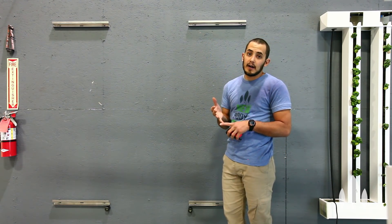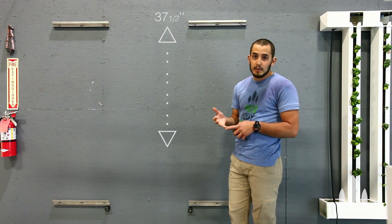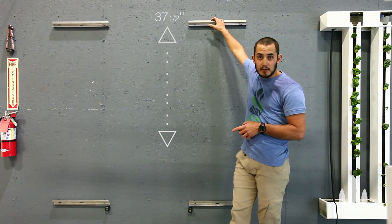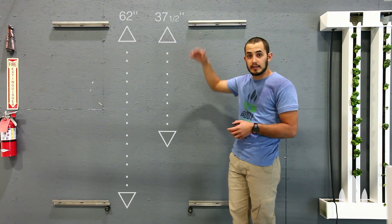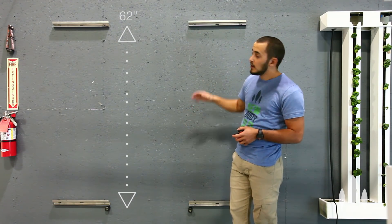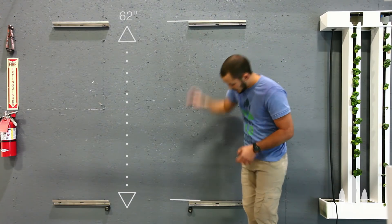If you have three-foot towers, you're going to have 37.5 inches between the top lip of your upper channel and the top lip of your bottom channel. If you have a five-foot tower, you're going to have 62 inches. We have five-foot towers here, so it's 62 inches from here to here.